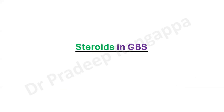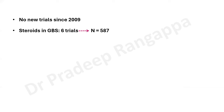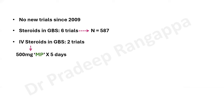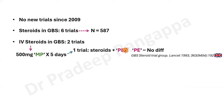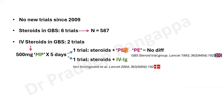Coming to the last point: is there a role for steroids in GBS? Summarily, there is no role of steroids in GBS. There are no new trials regarding steroids in GBS from 2009. There are six trials involving 587 patients. IV steroids were used in GBS in two trials, using 500 mg methylprednisolone for five days. One trial used steroid plus plasma exchange versus plasma exchange — there was no difference. One trial that most neurologists cite came from Denmark, using steroid plus IVIG.